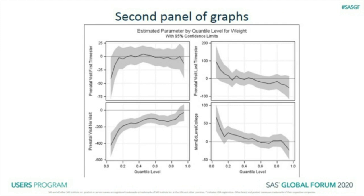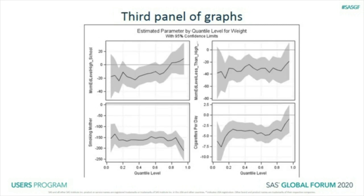Looking at prenatal visits: mothers with first-trimester visits versus last-trimester versus no visits — reference group is second trimester. Mothers who didn't have any visits had much lighter babies, and that difference was huge at the lowest quantile — 400 grams. That's gigantic. Educational level made almost no difference.